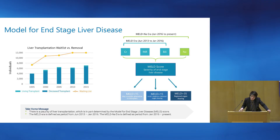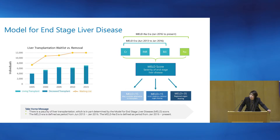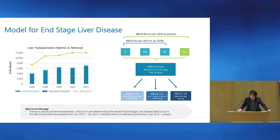Starting in 2016, sodium was added to how we calculate the MELD score. The reason for that is because hyponatremia was found to be an independent risk factor for death for those waiting on the transplant list. That's why sodium was added to this score.